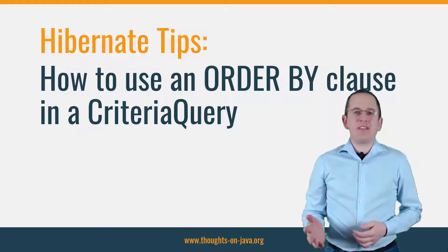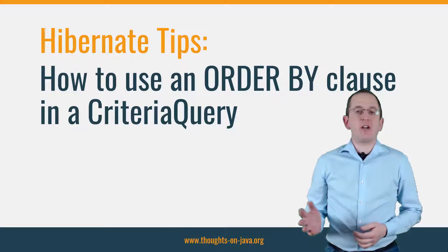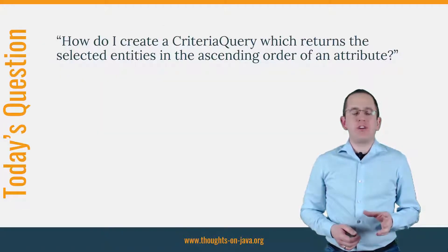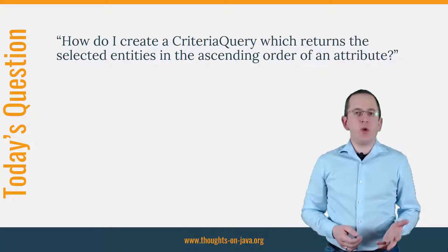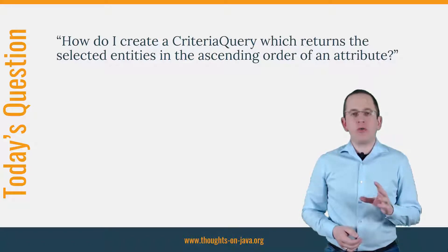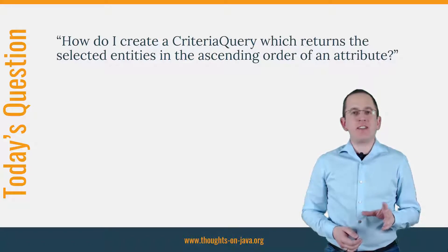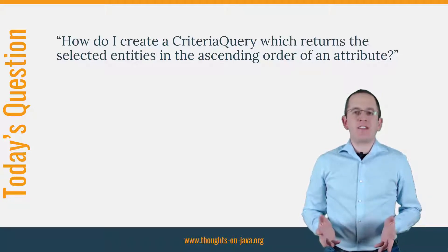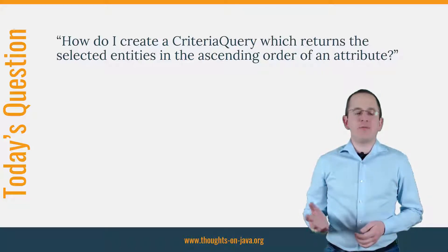Hi, I'm Torben Janssen from thoughts-on-java.org with a new Hibernate Tip. I got the following question on my blog: How do I create a Criteria Query which returns the selected entities in the ascending order of an attribute? I will answer this question in this video.